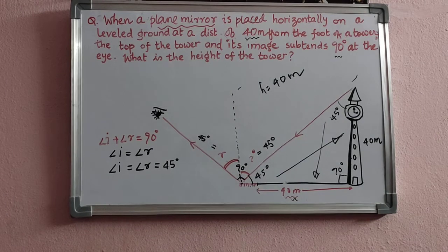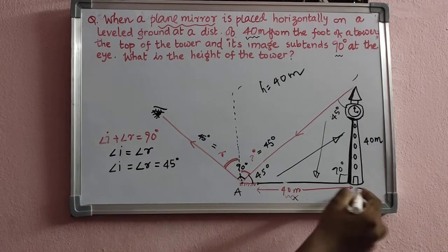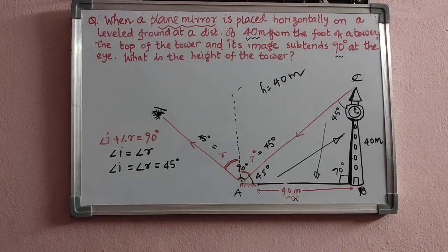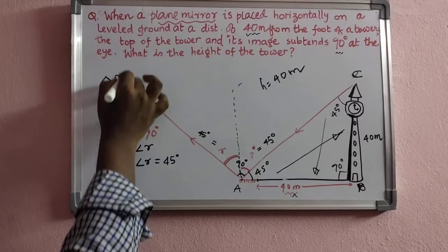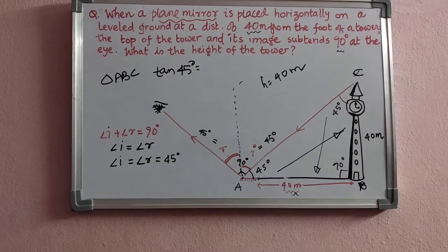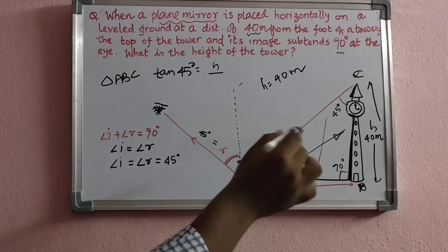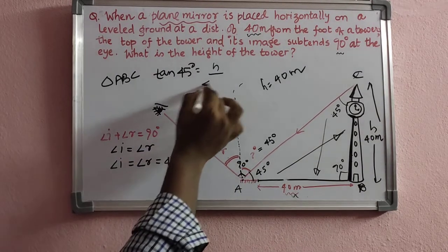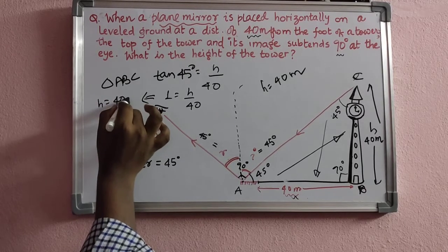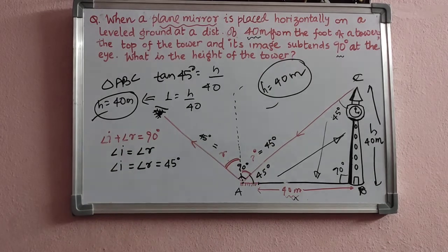If you are not convinced, we can also use trigonometry. Take the triangle ABC, where A is the mirror position, B is the foot of the tower, and C is the top of the tower — right-angled at B. Then tan 45° = h / 40. Since tan 45° = 1, we get 1 = h / 40, so h = 40 meters. In both methods we get the height of the tower as 40 meters.